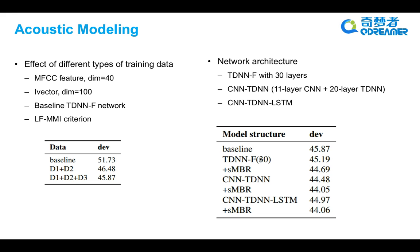We also evaluated the performance of four types of network architecture: the baseline TDNN-F network, the TDNN-F network with 30 layers, the CNN-TDNN network with 11 CNN layers and 20 TDNN layers.